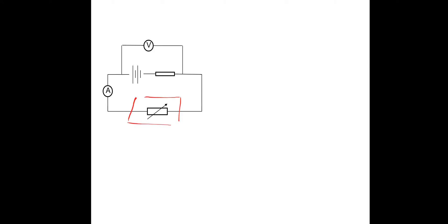Here's the circuit — this is a required practical for A-level. Essentially what we do is change the variable resistor, and when we make changes to the variable resistor we get differing values of current and voltage. The voltage we are measuring is the voltage available to the circuit.